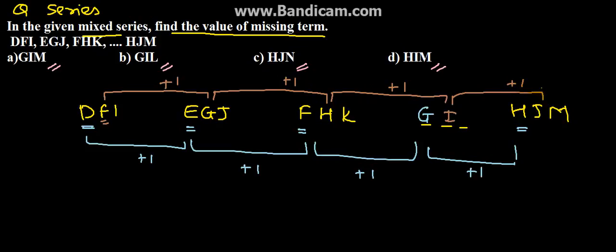And now the third term, we have I. After I we have J. After J we have K, and after K we have L, and after L we have M. This is also increasing by plus 1.